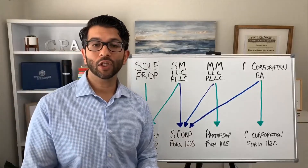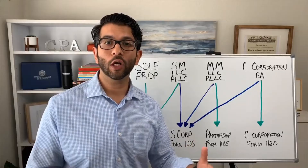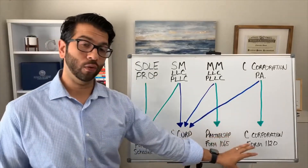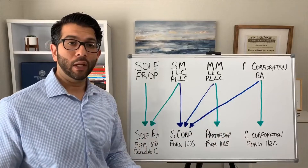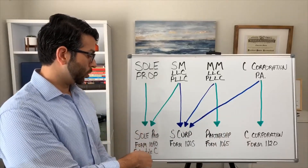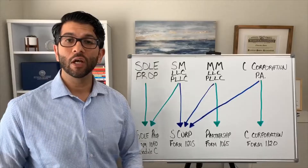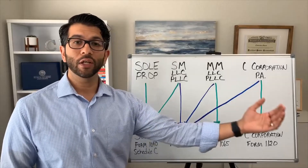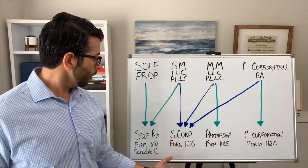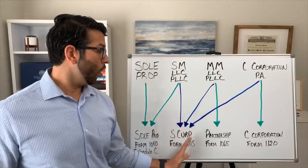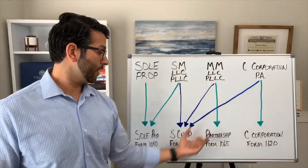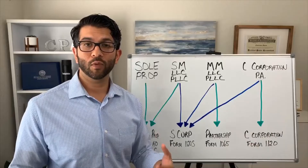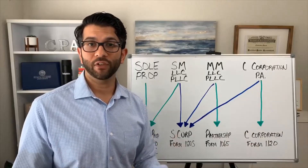Something very important that a lot of new entrepreneurs don't understand: when are these different tax documents due? The sole proprietorship return is due at the same time as your individual tax return — typically April 15th, with an option to file a six-month extension. However, all these other entities — S corporations, partnerships, and C corporations — those tax returns must be filed by March 15th, a full month earlier.